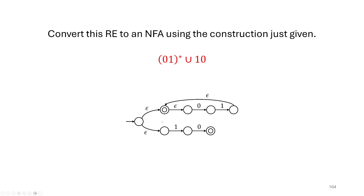All that remains is to union these two machines together. We do that by creating a new start state with epsilon transitions to each of the original start states, so we run these two machines in parallel — if either of them is in an accept state we accept. That was a quick example showing how we can start with a regular expression and end up with a non-deterministic finite automaton, which is particularly useful in a computer where we might want to use a regular expression but need a state machine to actually compute with.